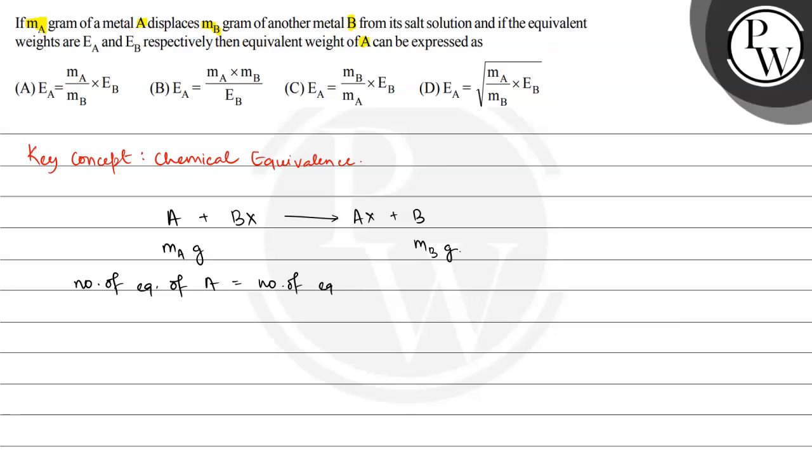number of equivalents of BX. And number of equivalents of BX is equal to number of equivalents of B, because one equivalent of BX contains one equivalent of B, which is equal to